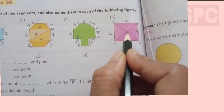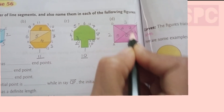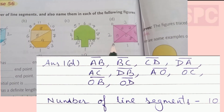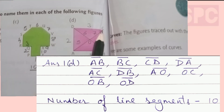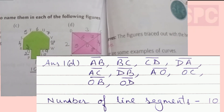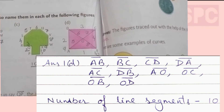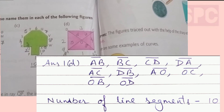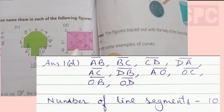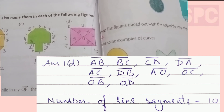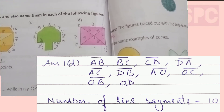For figure D, after counting all the line segments you will find there are a total of 10 line segments. The outer four are: AB, BC, CD, and DA. The diagonals inside are: AC and DB. There is also a centre point O, giving additional line segments: DO, OC, OB, and OA. Write all these line segment names in your notebook.